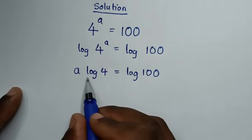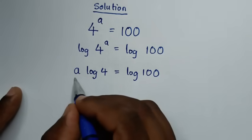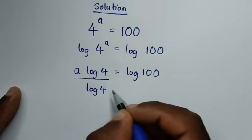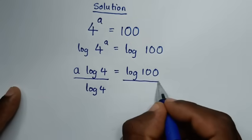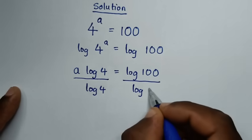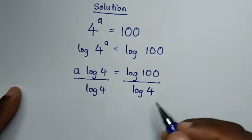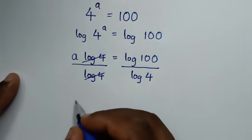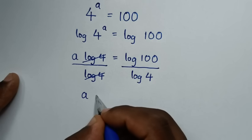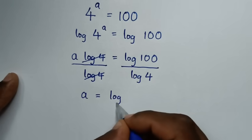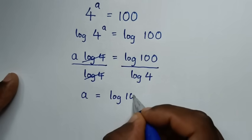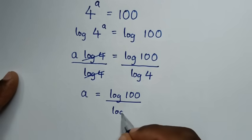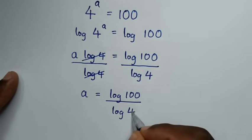Then we'll divide by log of 4 on both sides — over log of 4 here, and over log of 4 there. So these will cancel, and it will be a is equal to log of 100 over log of 4.